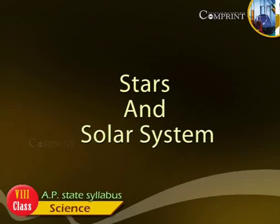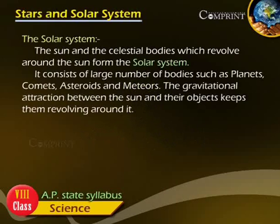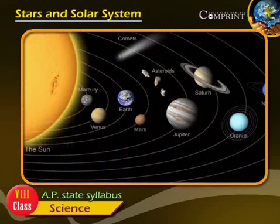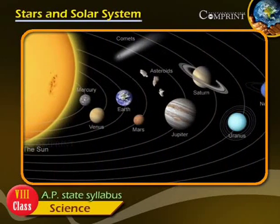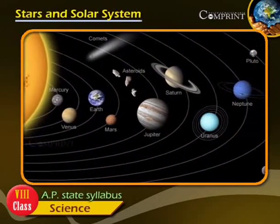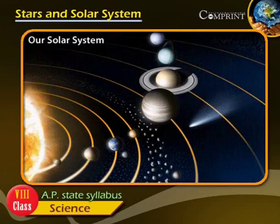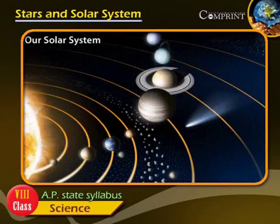Stars and the Solar System. The Solar System: The Sun and the celestial bodies which revolve around the Sun form the Solar System. It consists of large number of bodies such as planets.